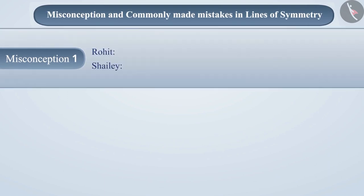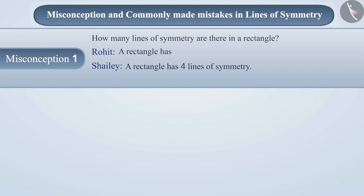Misconception 1. Rohit and Shailey were trying to guess the number of lines of symmetry in a rectangle. Shailey said that there are a total of four lines of symmetry and Rohit said that there are only two lines of symmetry in a rectangle. Who is correct over here?